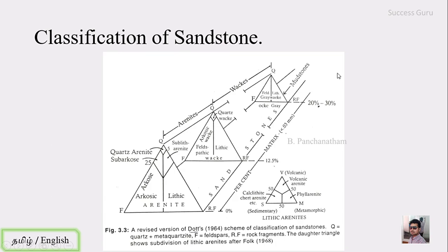If the matrix percentage exceeds 30 percentage, then it is called a mudstone, not a sandstone. If the percentage of finer sediments — less than 0.3 millimeter — exceeds 30 percentage, it is classified as mudstone. The lithic arenite is further classified based on the origin of rock fragments: if volcanic origin, it is volcanic arenite; if metamorphic origin, it is phyllitic arenite; and if sedimentary origin, it is called calc-lithic or chert arenite.